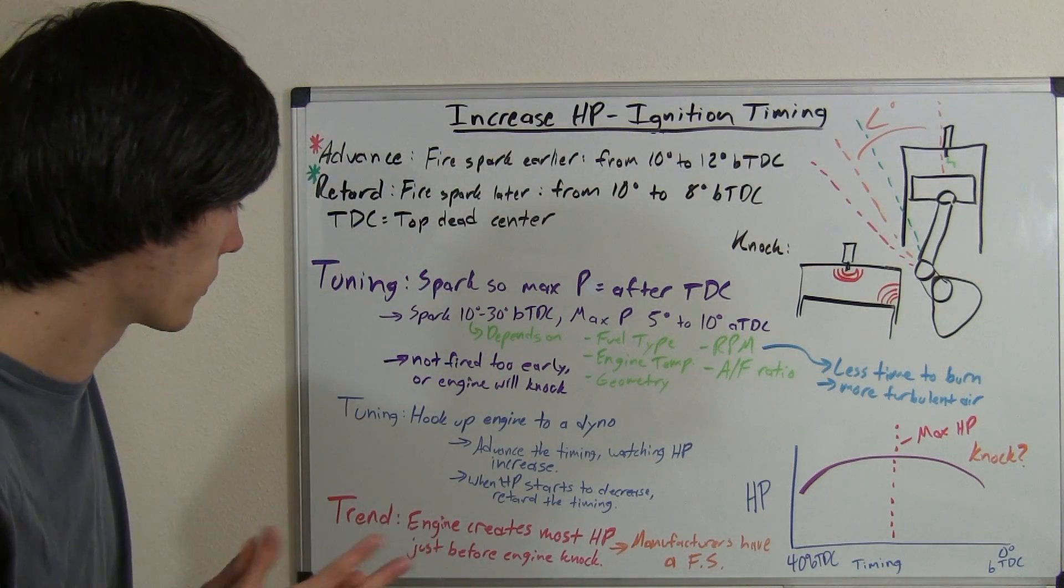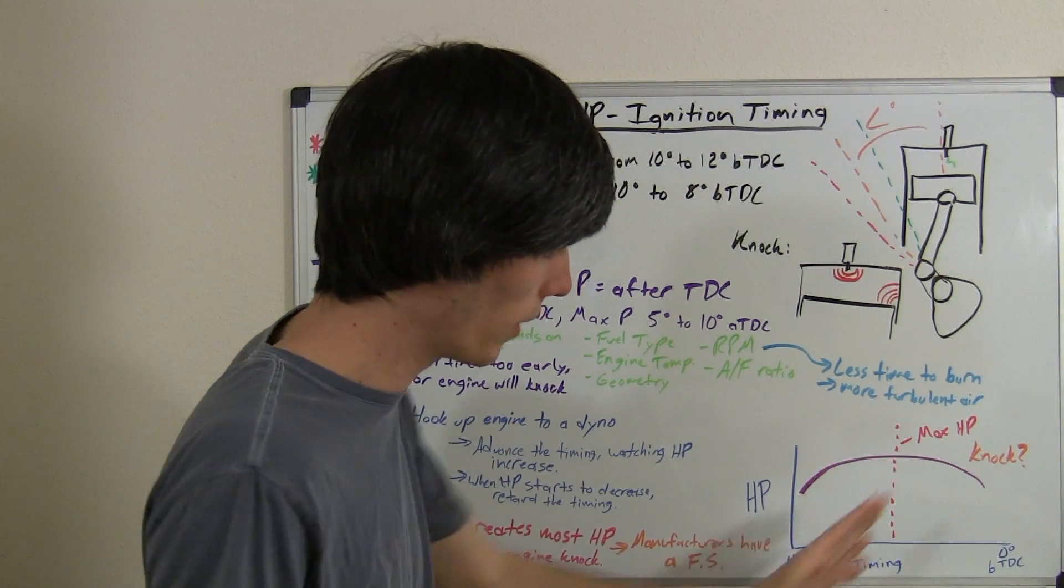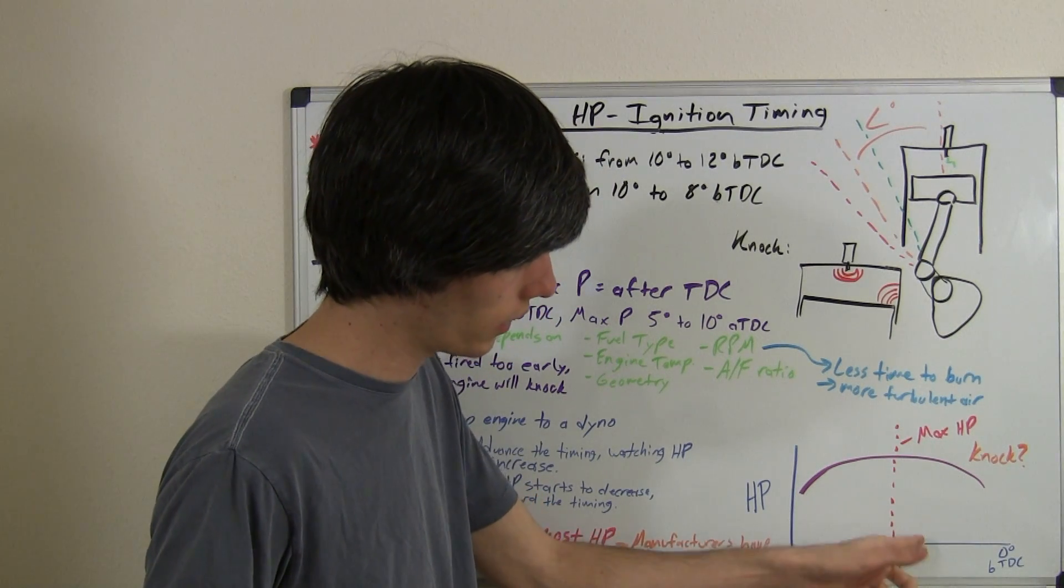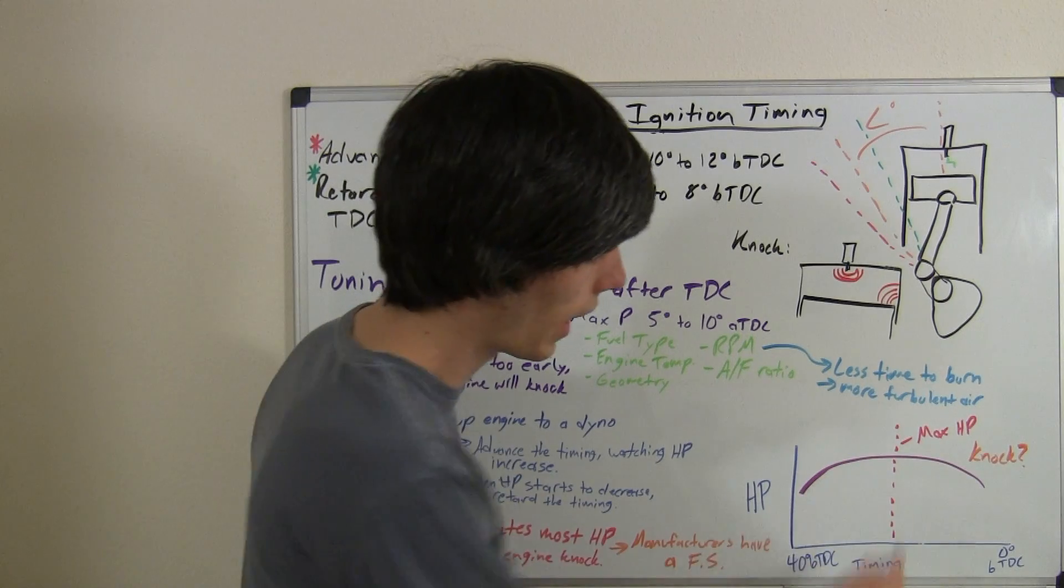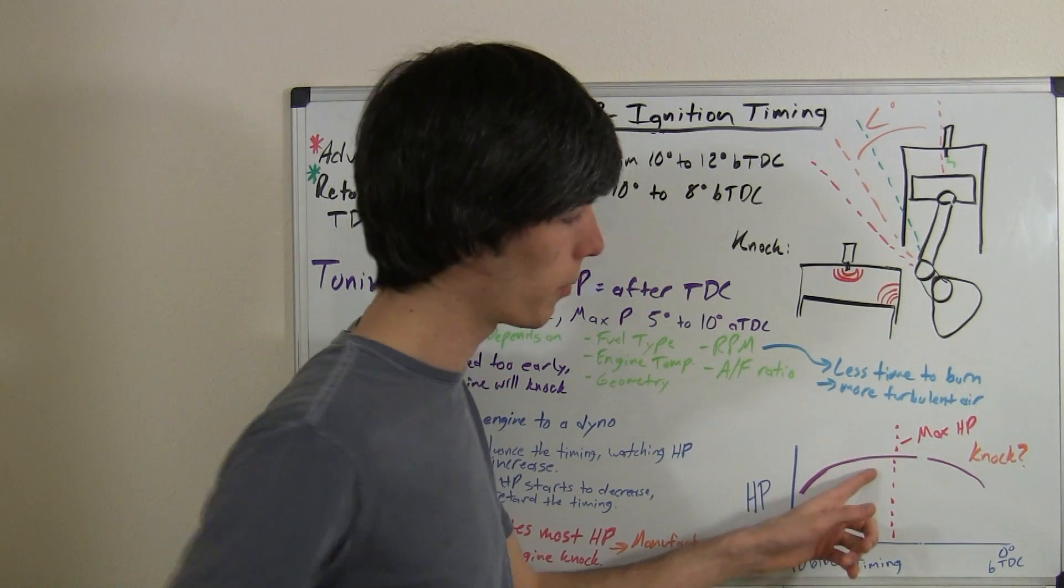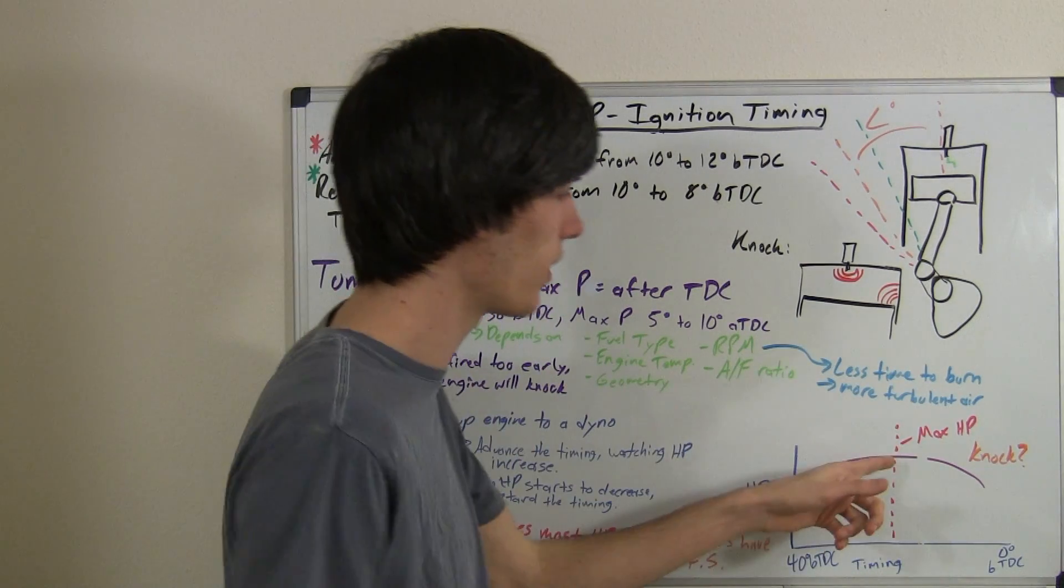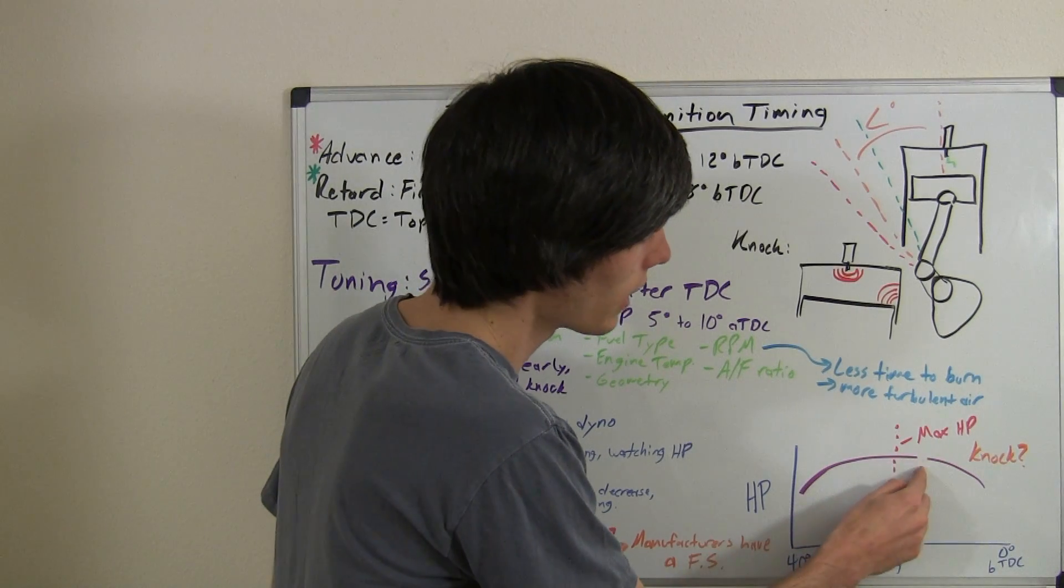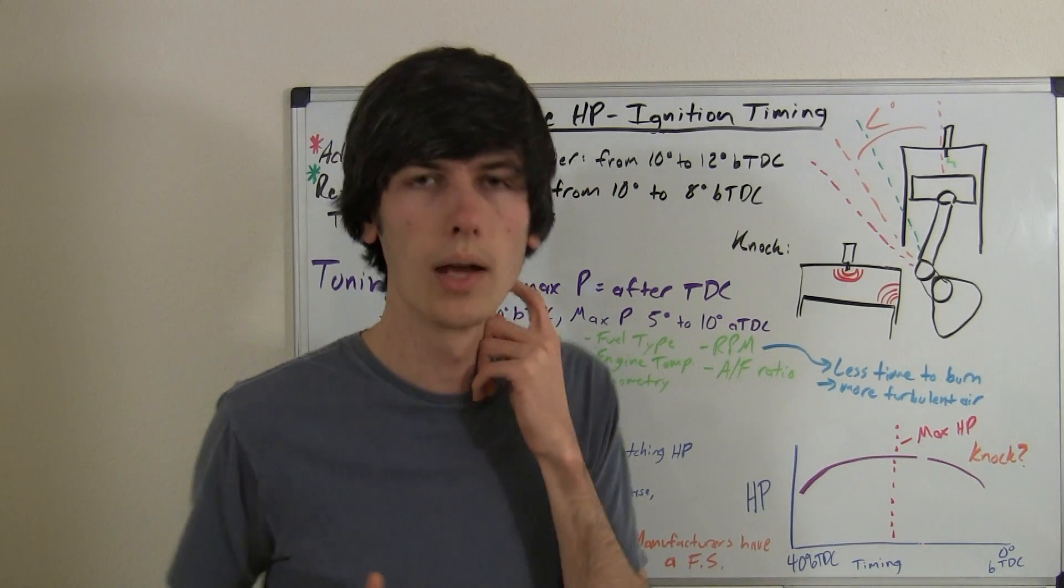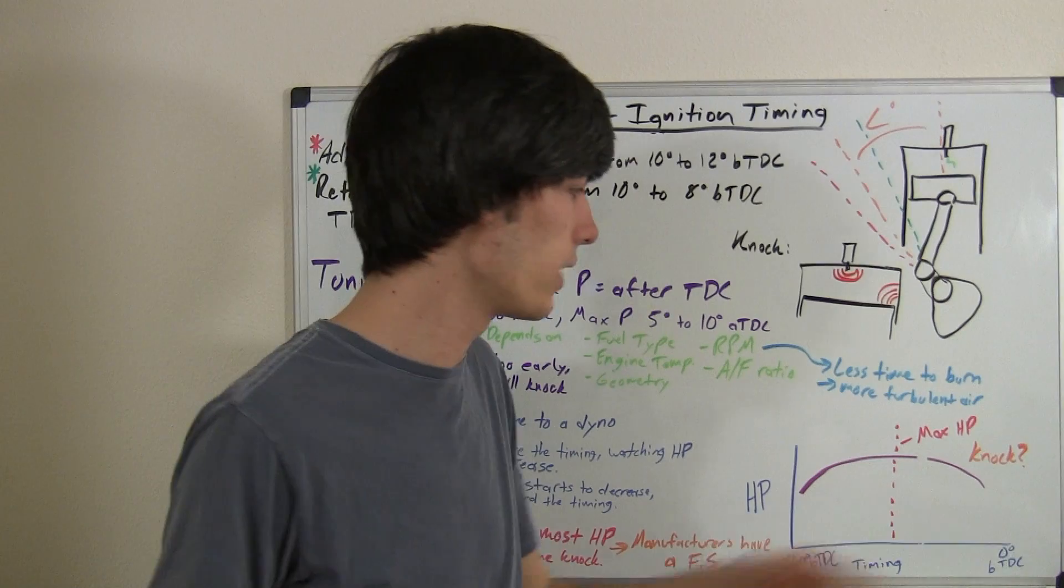Now, what kind of can create some problems here is knock. So if you're going to knock at, say, this point right here is 15 degrees before top dead center, and you know you're going to knock there, well, even though maximum horsepower may occur at 20 degrees before top dead center, then you can't get there because you're going to knock at 15. So you might set it at 14 or 13 degrees before top dead center. That way, you're getting the maximum horsepower you can, but you're not going to ruin your engine.